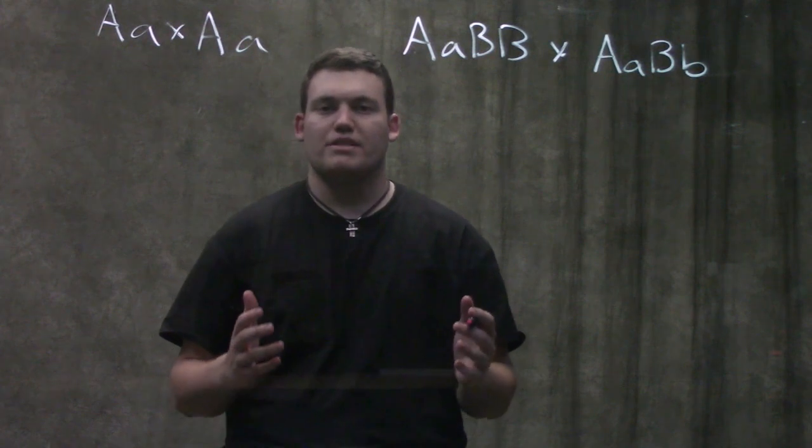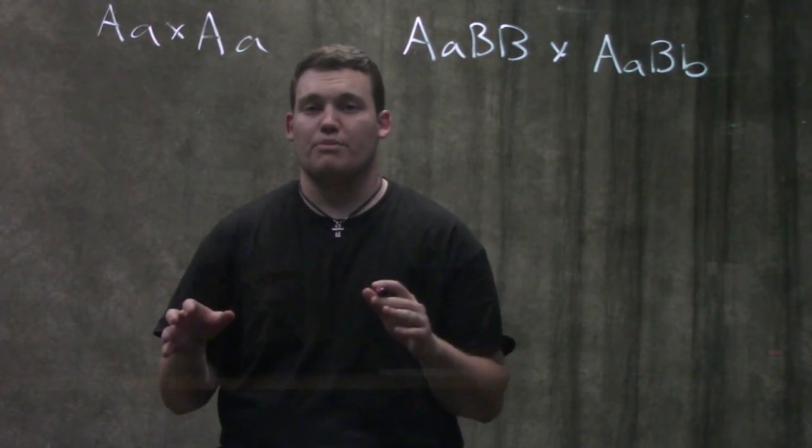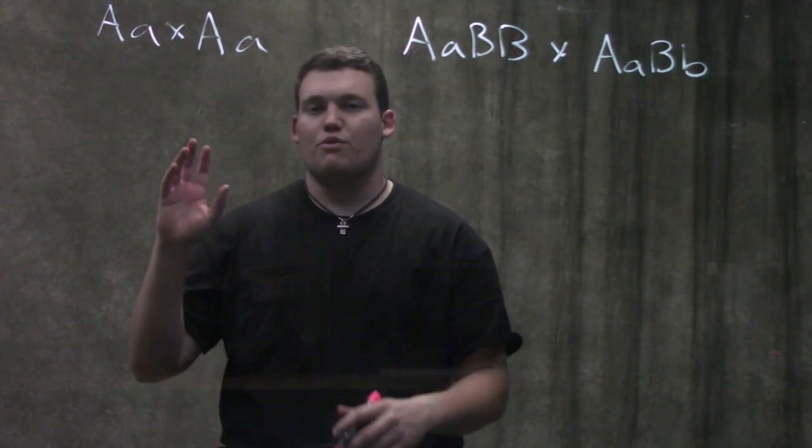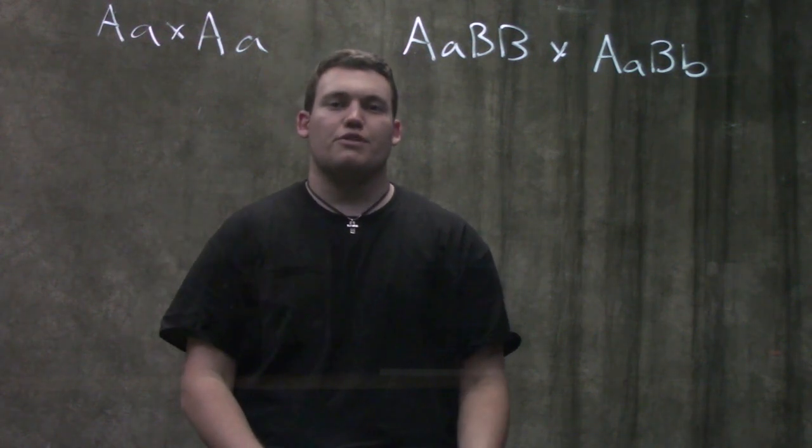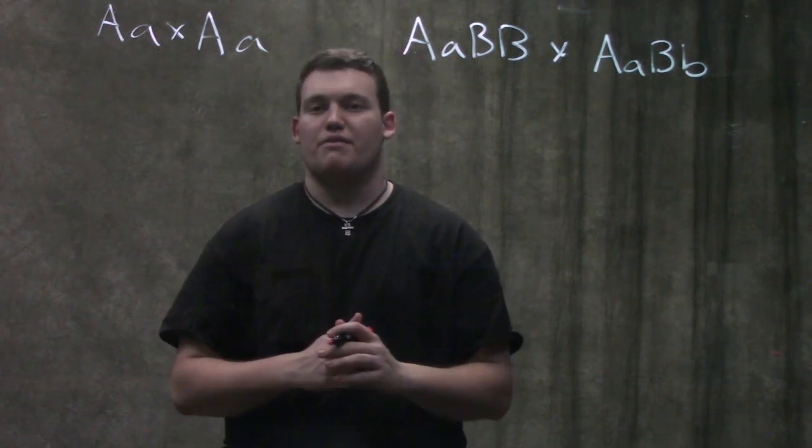What the principle of independent assortment basically says is that when we have genes on different chromosomes, not on the same chromosome but on different chromosomes, if we have one on chromosome 2, let's say the gene for hair color is on chromosome 2, and the gene for the number of toes you have is on chromosome 12, those things assort independently of each other.